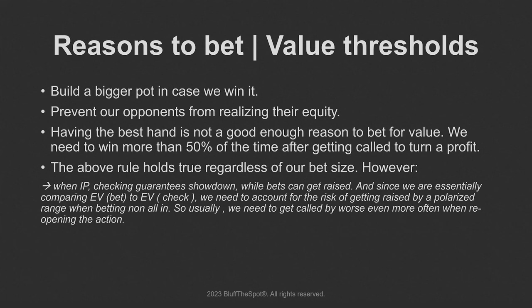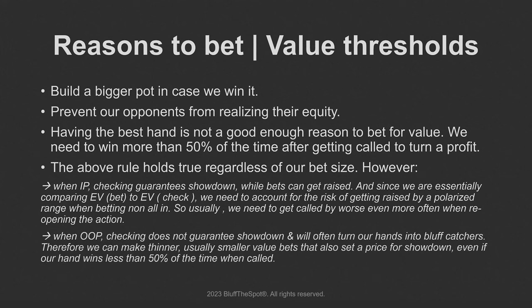To think about this simply: the more capable your opponent is of check-raising well as a bluff, the more careful you should be about reopening the action on the river. If you're playing against someone who's very capable, tricky, and aggressive and finds the right frequencies, you want to worry about your value thresholds and be careful with your thin value bets. If you're playing against someone who's not as tricky, doesn't slow play much, doesn't bluff-raise enough, and plays mostly face-up strategies, you're usually able to value bet a lot more thinly.